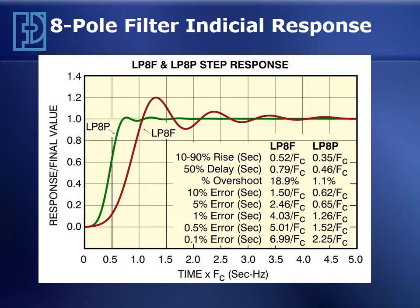The LP8F on the other hand has about 19% overshoot and lots of ringing resulting in longer settling times. In general, this would be a poor choice for a transient response measurement or a shock measurement — for example, where you're trying to ascertain the peak pressure value in a gun barrel. If you sample at that first overshoot peak, you're making almost a 20% error.